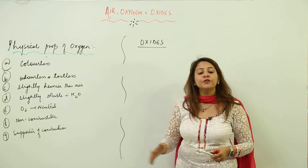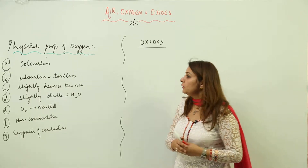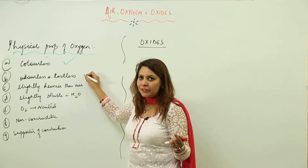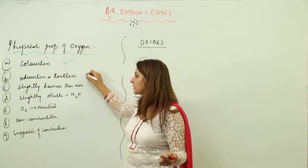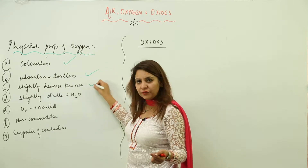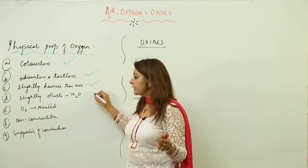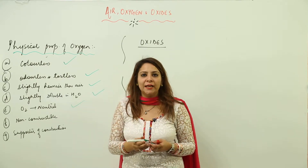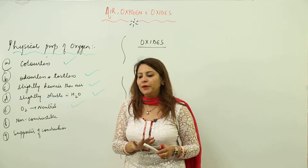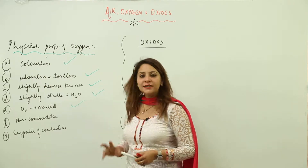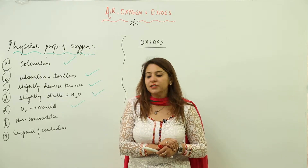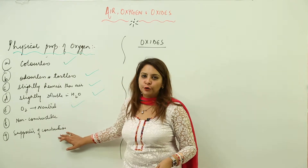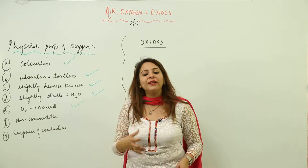If we look at the physical properties of oxygen, we find that it is a colorless gas, it doesn't have any distinct smell so it is odorless, tasteless, heavier than air, slightly soluble in water, and it is a neutral oxide — neither acidic nor alkaline or basic. There are two special properties of oxygen: it is non-combustible, and it is a supporter of combustion.